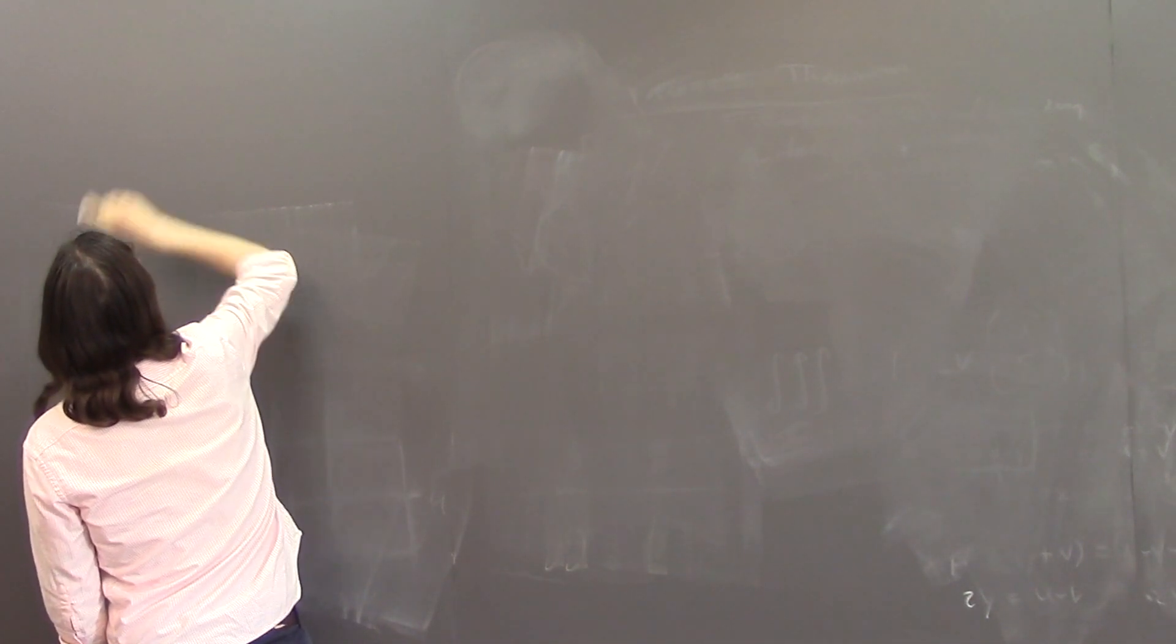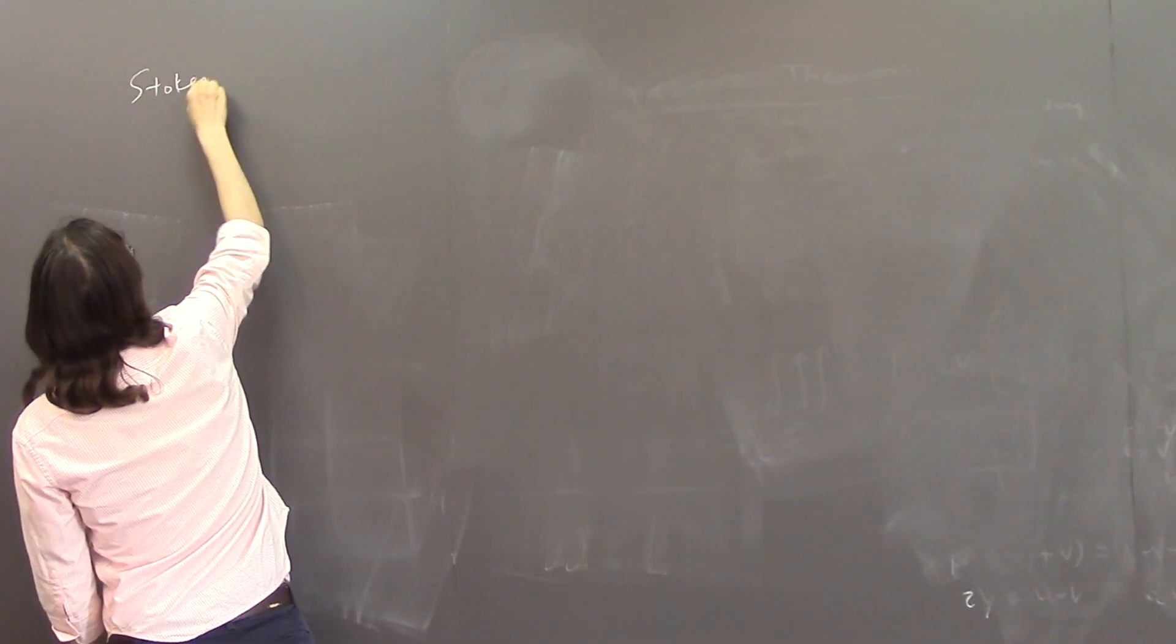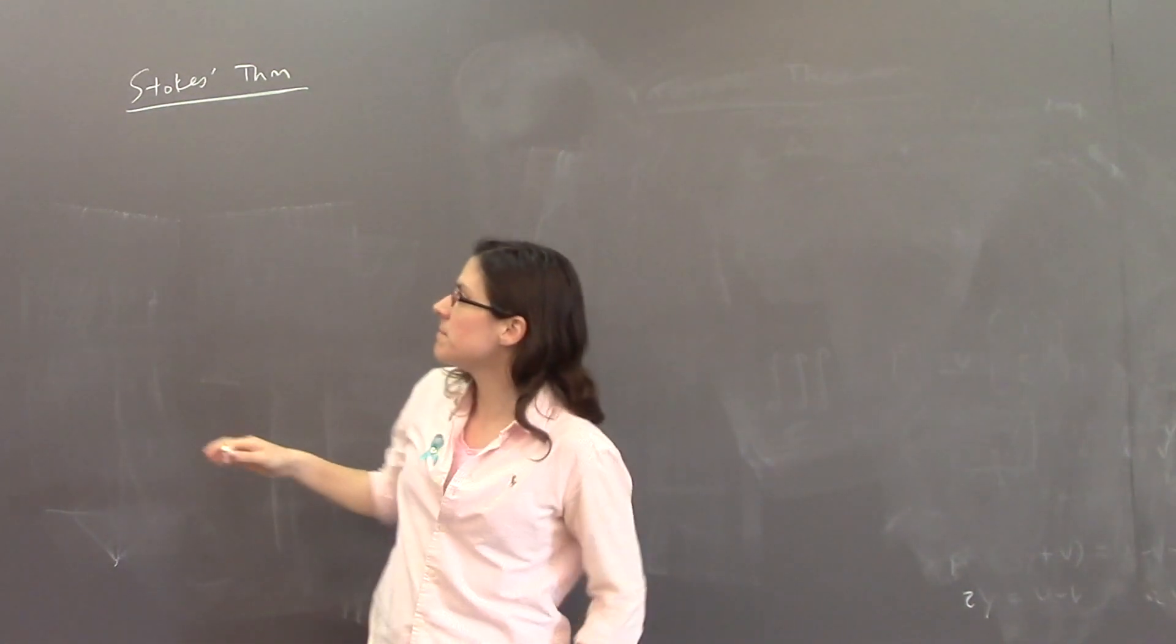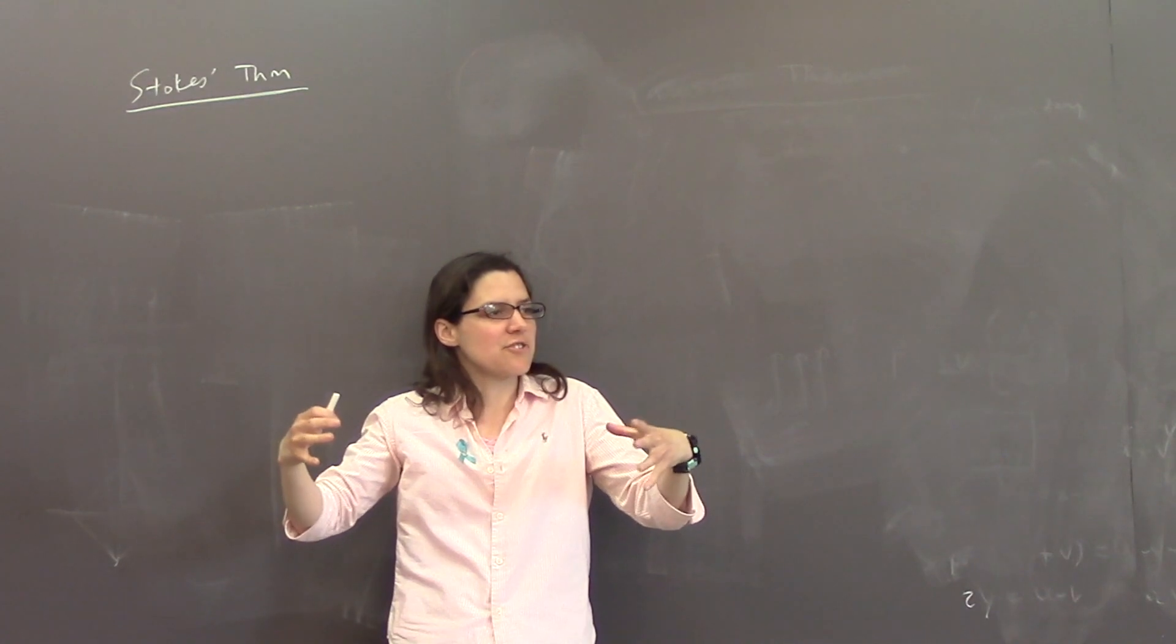So, Stokes' Theorem is basically taking Green's Theorem and lifting it up into three-dimensional space.